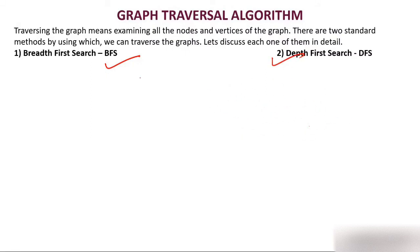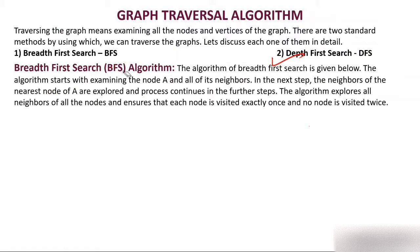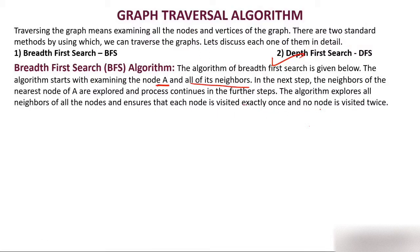Today we will discuss breadth first search. The BFS algorithm starts by examining a source node A and all its neighbors. Then the neighbors of A's nearest nodes are explored, and the process continues — exploring neighbors of neighbors — until all nodes of the graph are explored. The algorithm ensures each node is visited exactly once.